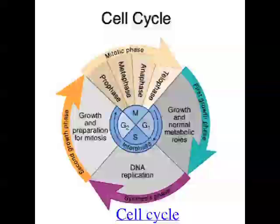Mitosis occurs as part of the normal cell cycle. The cell cycle can be split into two main components: mitosis and interphase. Interphase can be broken down into three components. The first is the G1 phase — G stands for growth or gap — where the cell grows. The next is the S phase, which stands for DNA synthesis, where the DNA is replicated. The last stage is the G2 phase, where the cell grows a bit more and prepares for cell division or mitosis.